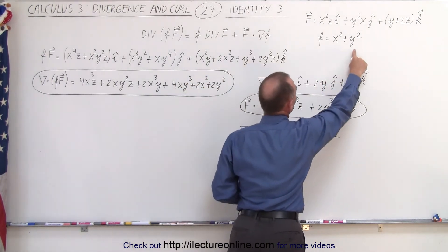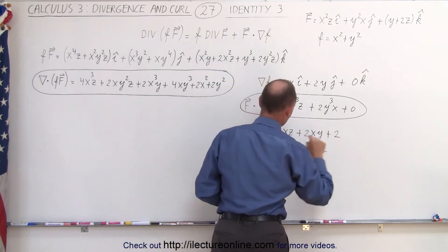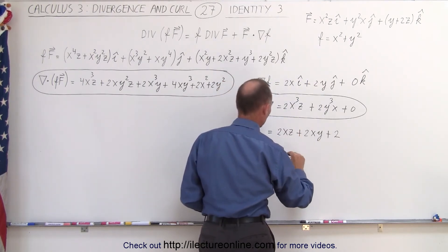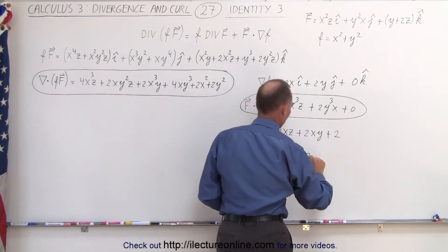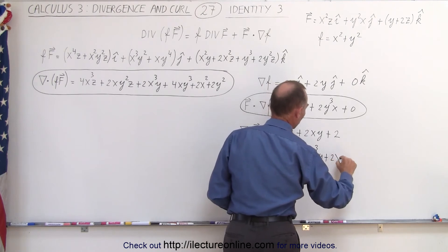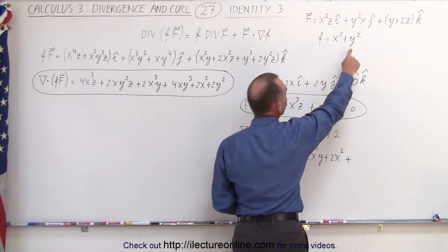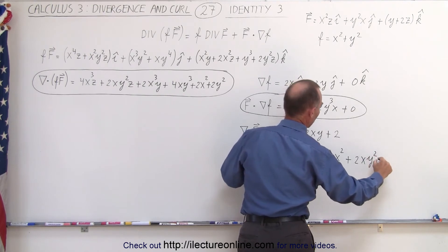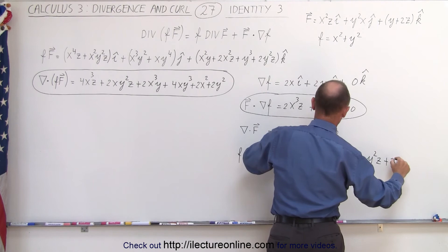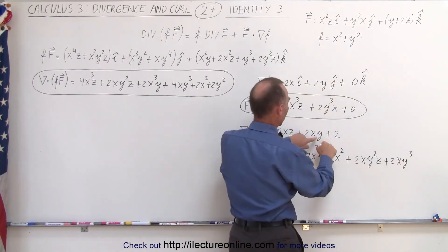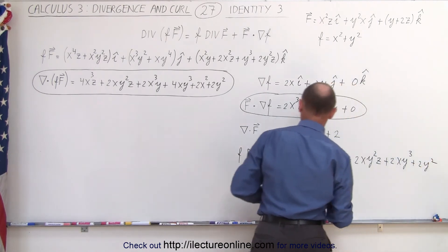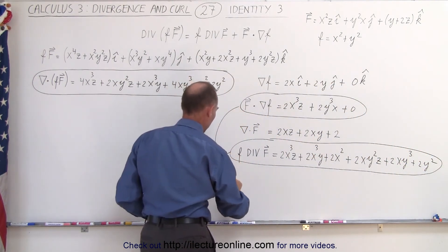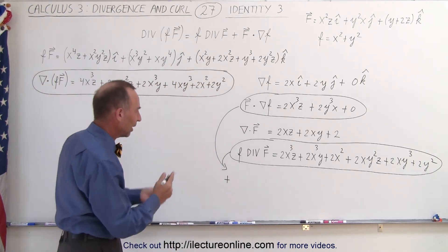Now we multiply the scalar function f = x²y² by the divergence of the vector field. Multiplying x² by each term gives 2x³z + 2x³y + 2x². Then multiplying y² by each term gives 2xy²z + 2xy³ + 2y². This completes the f(∇·F) portion of the right side.